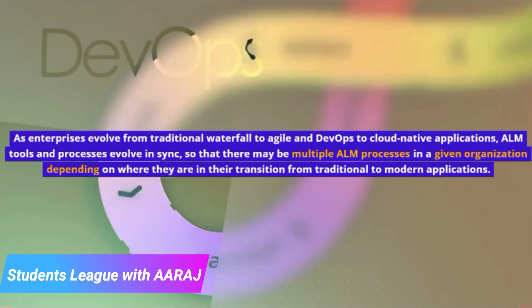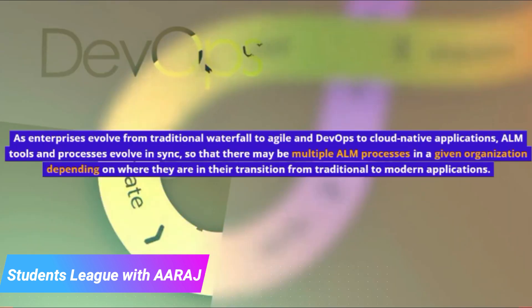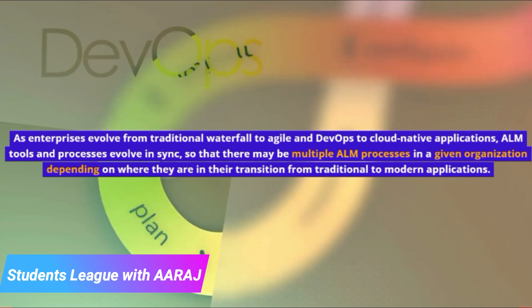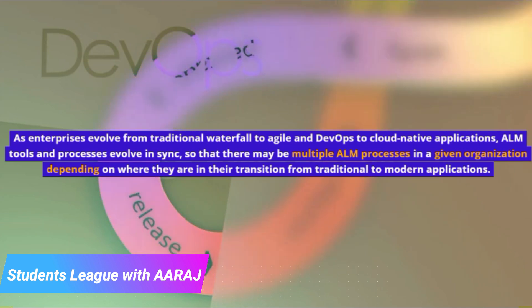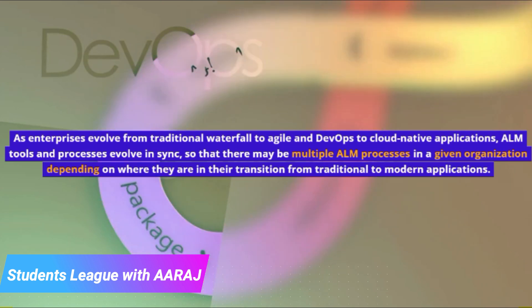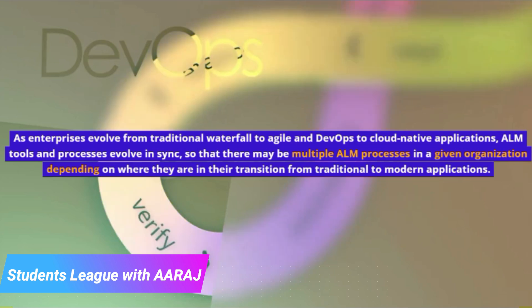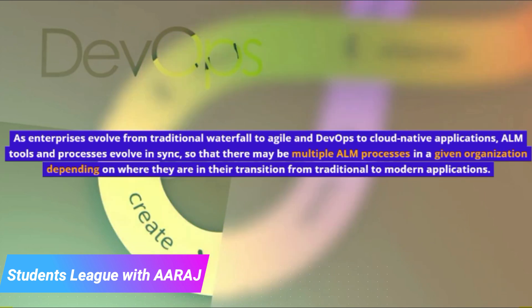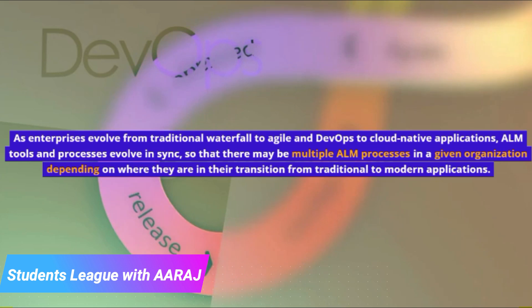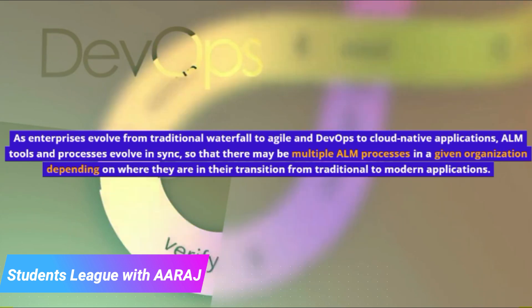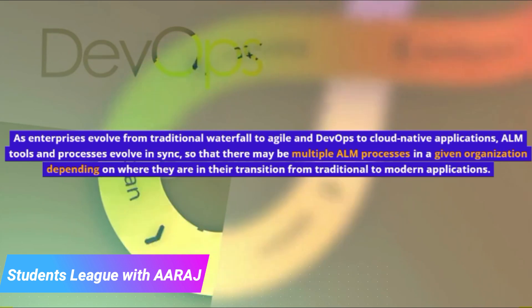As enterprises evolve from traditional waterfall to agile and DevOps to cloud-native applications, ALM tools and processes evolve in sync, so that there may be multiple ALM processes in a given organization depending on where they are in their transition from traditional to modern applications.